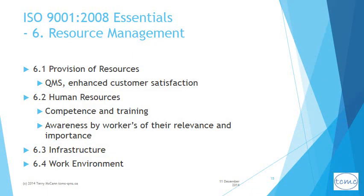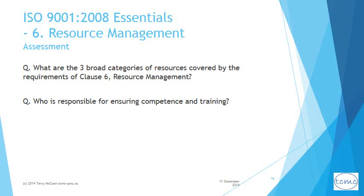Clause 6 is all about the management of resources. Clause 6.1 is a general statement of why you need resources in relation to a quality management system and enhanced customer satisfaction. QMS requirements for human resources are laid out in clause 6.2, which describes the organization's responsibility for ensuring competence and training where necessary, and ensuring that staff are aware of the relevance and importance of their activities in the bigger picture of the organization's quality objectives. Management responsibility for adequate infrastructure and provision of a work environment conducive to product conformity are covered in clauses 6.3 and 6.4.